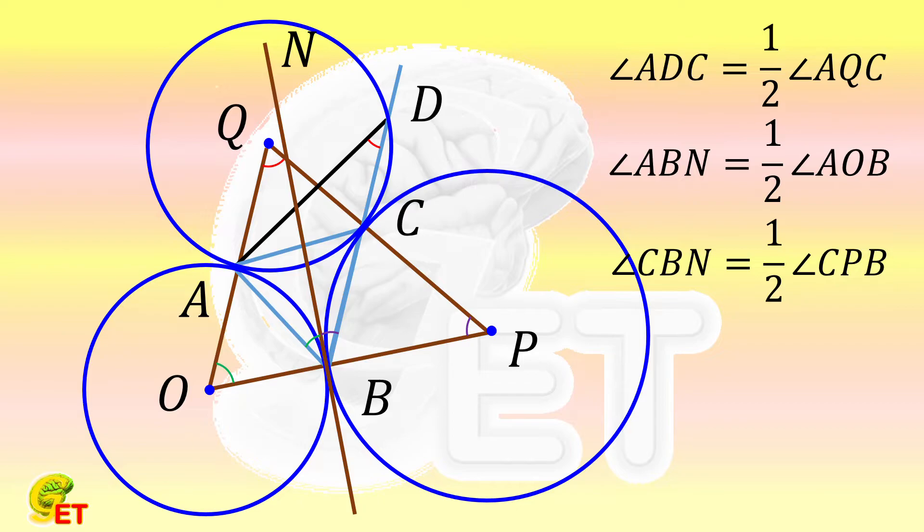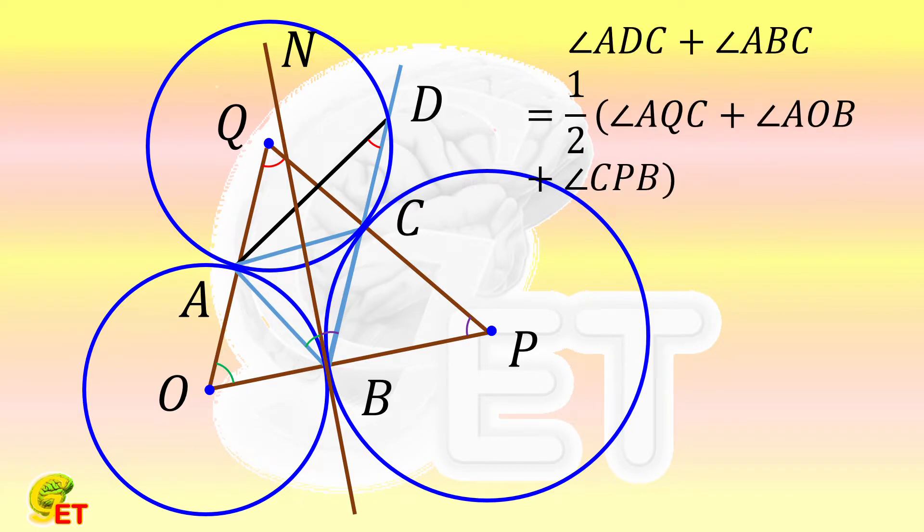Adding up these three equations gives angle ADC plus angle ABC equal to half of the summation of angle AQC, angle AOB and angle CPB. The summation of the interior angles of the triangle OPQ is equal to 180 degrees. So the summation of these two angles is 90 degrees.